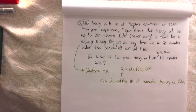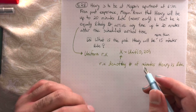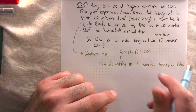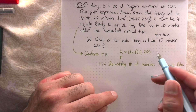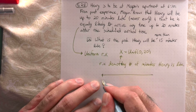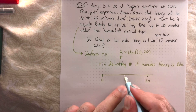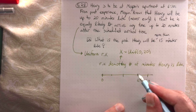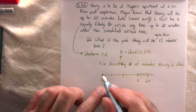The number of minutes he's late is uniform between 0 and 20. What really matters in a uniform setting is the length. We're looking for the probability he's more than 15 minutes late, so it's just this portion — this distance — over the total length of the interval.